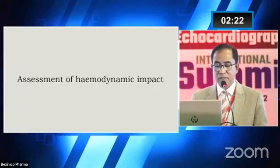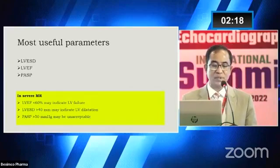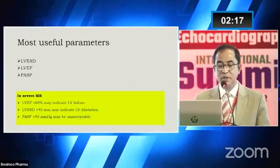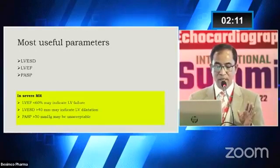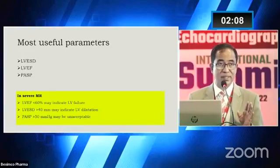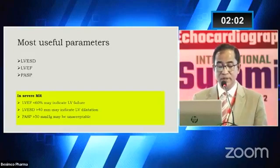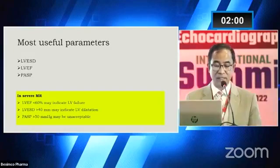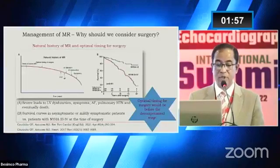The next important thing is assessment of the hemodynamic impact of mitral regurgitation. We are especially concerned with left ventricular end-systolic diameter, left ventricular ejection fraction, and pulmonary artery systolic pressure. If the left ventricular ejection fraction is less than 60%, this is abnormal in the case of severe MR. If the end-systolic dimension is more than 40 mm, this indicates a dilating left ventricle. The PASP cutoff is 50 mmHg.